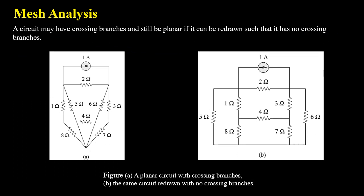A planar circuit is one which doesn't have any crossover branches. Sometimes we may come across a circuit which apparently has crossover branches, but if you redraw the circuit you may find that the same circuit has no crossover branches. So an apparently non-planar circuit, by redrawing, can be converted into a planar circuit. Figure A shows a circuit with crossing branches, and redrawing the same circuit gives us a planar circuit with no crossover branches.